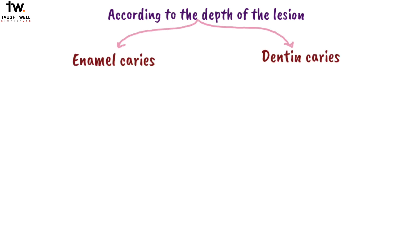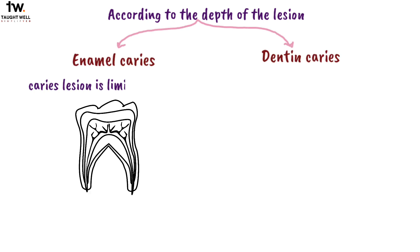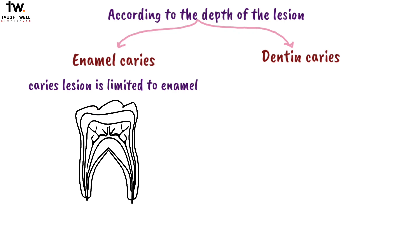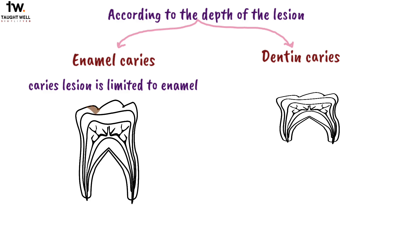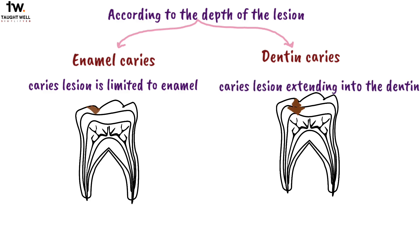According to the depth of the lesion, caries can be classified as enamel caries and dentin caries. Enamel caries means the lesion is limited to enamel, typically indicating it has not penetrated into dentin. However, histologically, many lesions detected clinically as enamel caries may have extended into the dentin. Dentin caries is a caries lesion extending into the dentin.